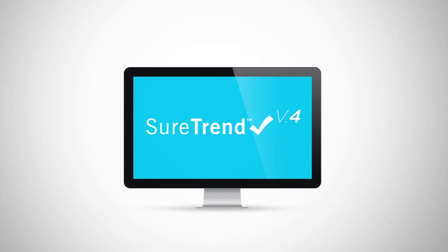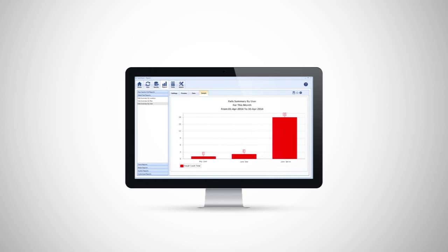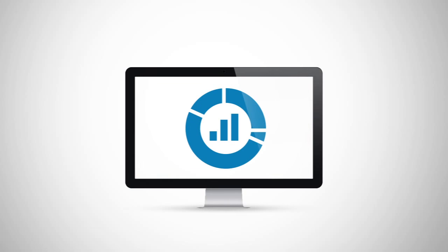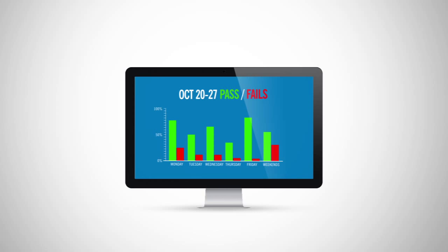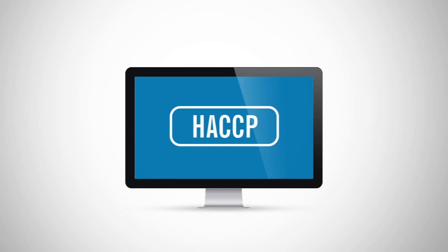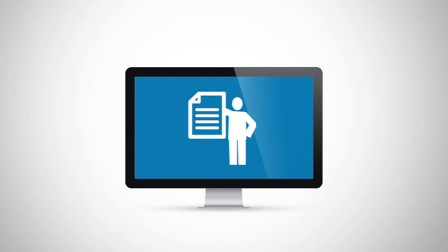To get the most out of your monitoring system, use Hygiena's complimentary SureTrend software to track and trend your test results. SureTrend software provides invaluable access to preset and customizable reports, making it easy to recognize trends and analyze sanitation effectiveness. SureTrend also assists in identifying environmental contamination, verifies sanitation as part of a HACCP program, and maintains records for audit compliance.